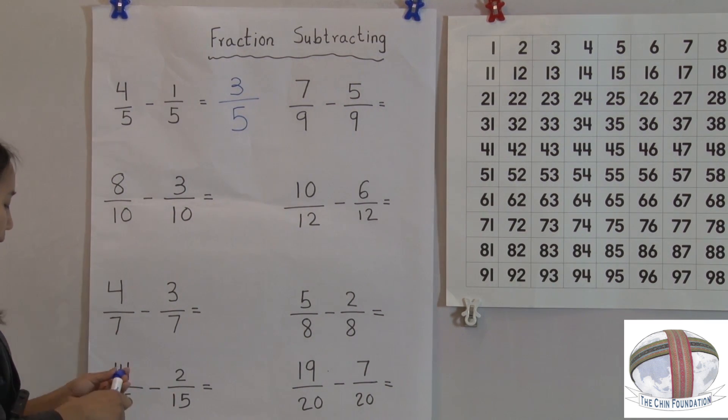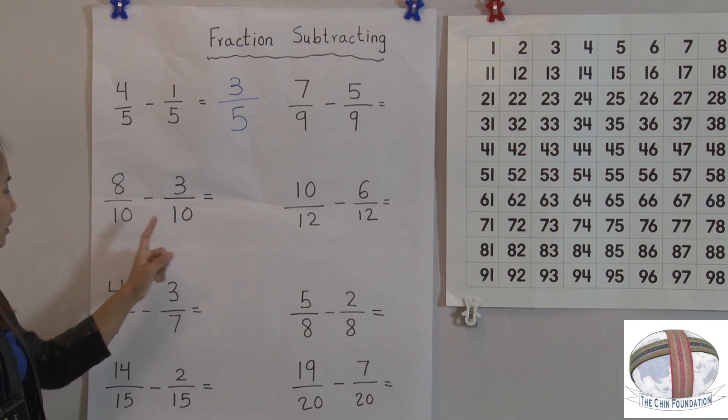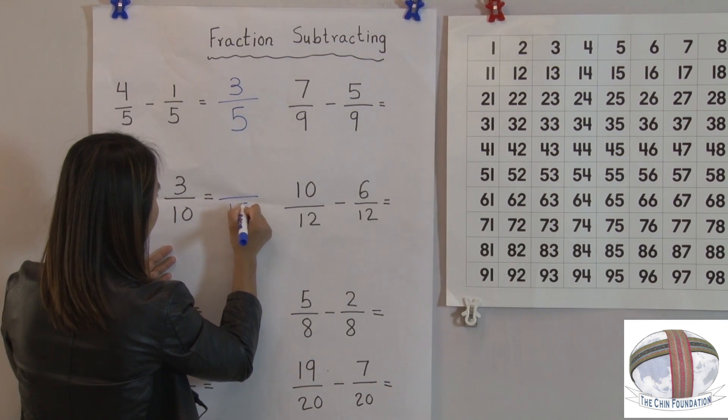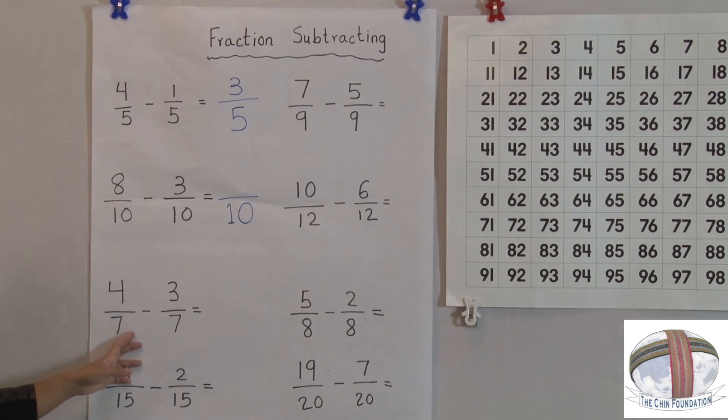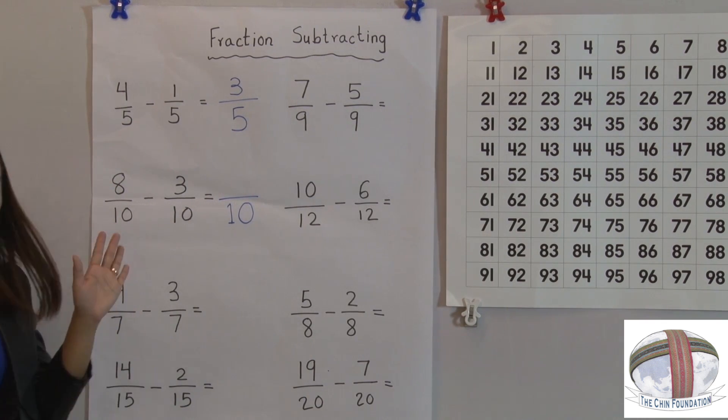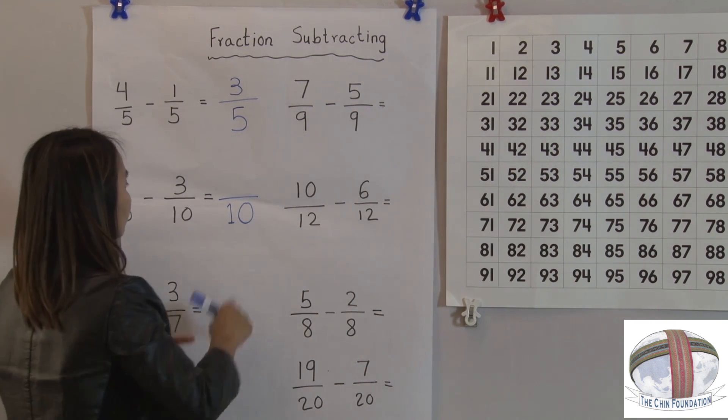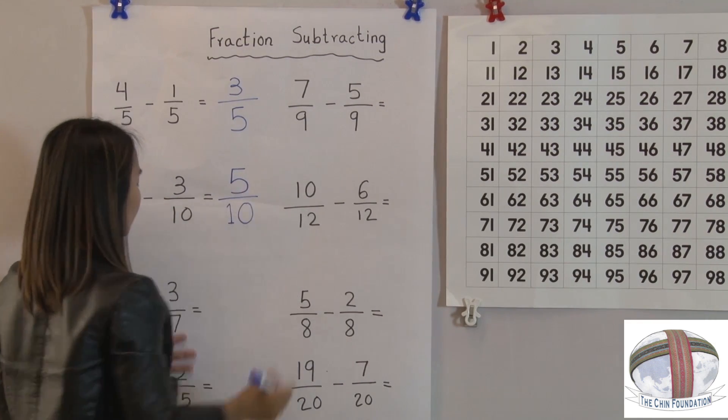Let's practice more. So this one, the denominator is the same. So we just need to write 10. Now we need to minus the numerator, which is 8 take away 3. 1, 2, 3. So it's 5.